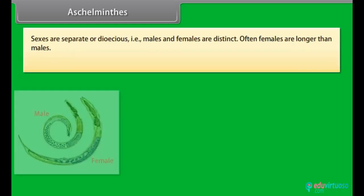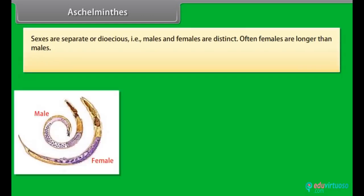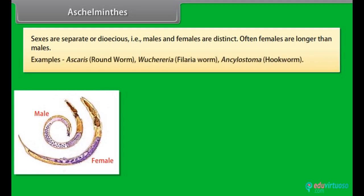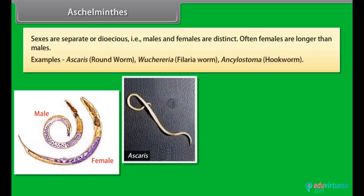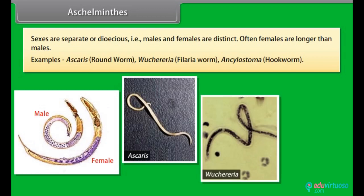Sexes are separate, i.e. dioecious — males and females are distinct. Often females are longer than males. Examples: Ascaris, i.e. roundworm; Wuchereria, i.e. filaria worm; Ancylostoma, i.e. hookworm.